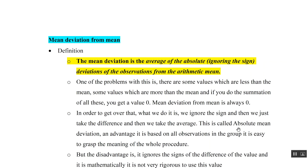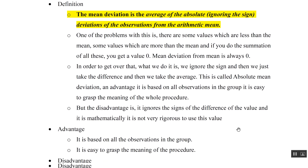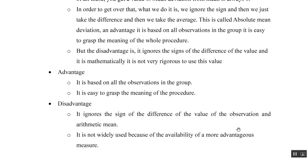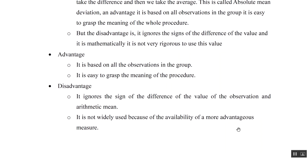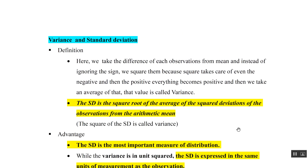Mean deviation from mean is the average of the absolute deviation of observations from the arithmetic mean. For example, with 10 observations, we find the difference from the mean and then take its average. Its advantage is that it is based on all observations and easy to understand. Its disadvantage is that it ignores the sign of the difference and it is not widely used because better measures are available.